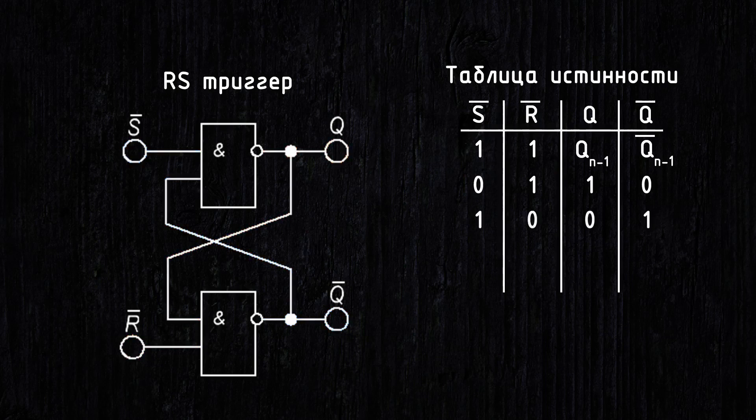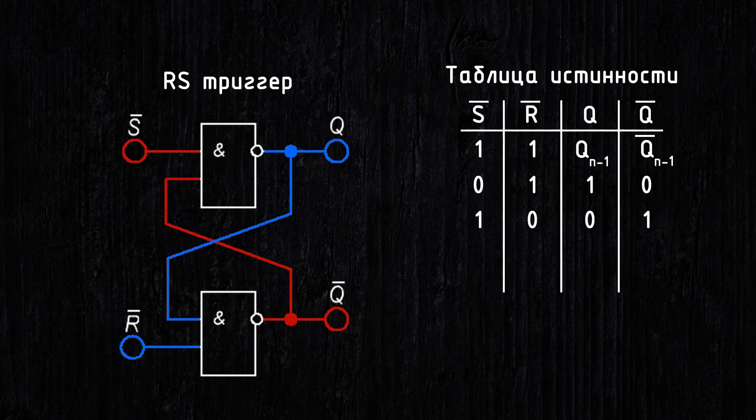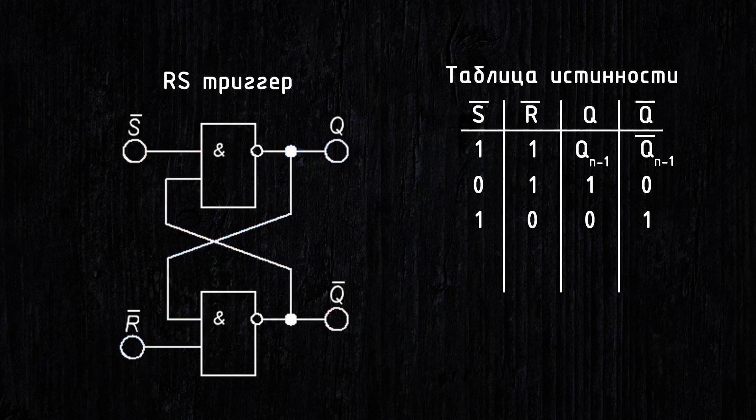Now we apply a 0 to the inverted R input and a 1 to the S input. This is the reset mode. A 0 on the lower branch will result in a 1 at the output of the NAND gate. Two 1s at the upper NAND gate will give a 0. A logical 0 will appear at the Q output. Therefore, it's the reset mode.